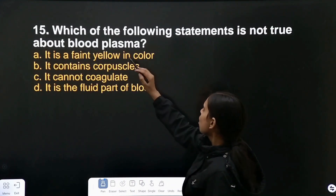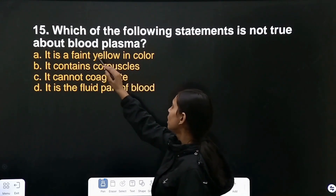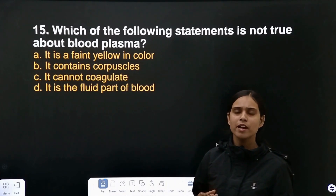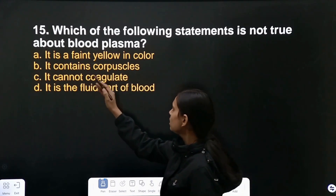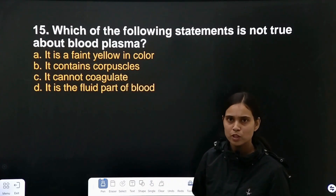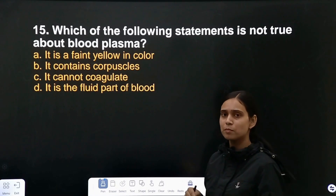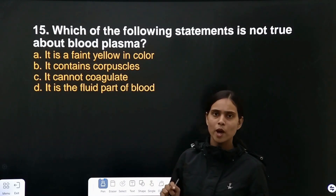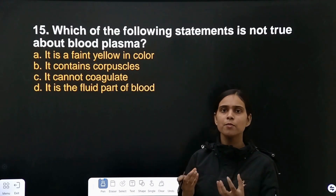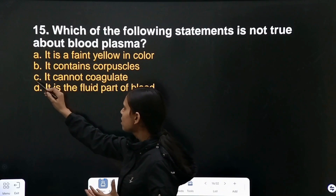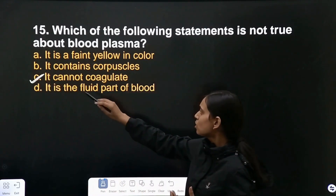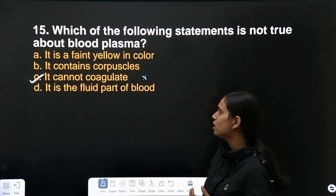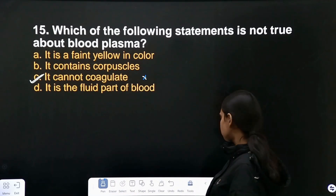Question number 15: which of the following statements is not true about blood plasma? Blood plasma is faint yellow in color — yes. It contains corpuscles like WBCs and RBCs — yes. It cannot coagulate — this is a wrong/false statement. Blood plasma can coagulate, so 'it cannot coagulate' is the incorrect statement.